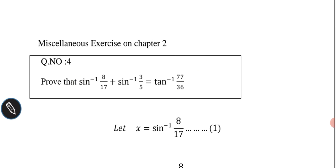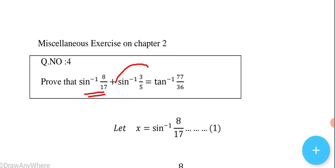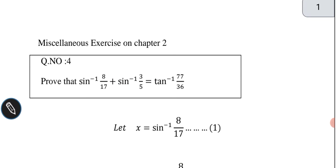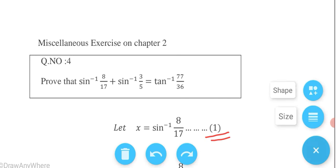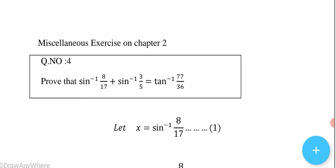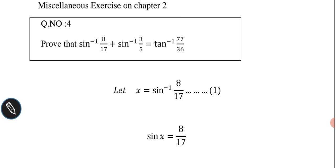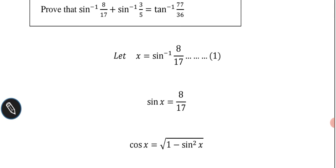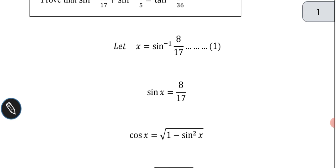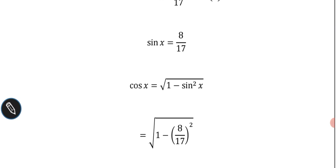First, we assume x = sin⁻¹(8/17) — let this be equation number 1. Moving the sine inverse to the other side, it becomes sin x = 8/17. By using the formula cos x = √(1 − sin²x), we can find the value of cos x if we know the value of sin x.